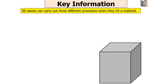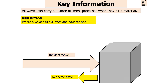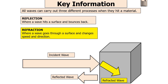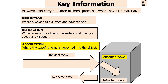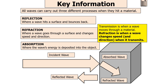All waves can carry out three different processes when they hit a material. When an incident wave encounters a new material you can get reflection, which is when a wave hits a surface and bounces back; refraction, when a wave goes through a surface and changes speed and direction; and absorption, when a wave's energy is deposited into the object. Refraction is an example of transmission — when a wave moves through a material and changes speed and direction.